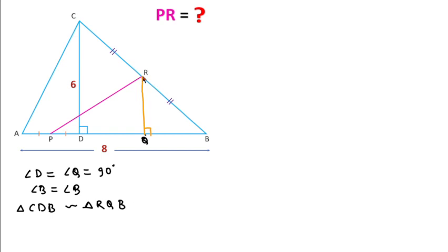Since R is the midpoint of BC, by the basic proportionality theorem we can say that Q will be the midpoint of DB, since these two triangles are similar.